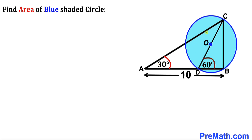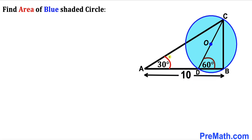Welcome to pre-math. In this video we have a blue shaded circle with center O and triangle ABC, such that side CD is the diameter of the blue circle. Side AB is 10 units, angle CAD is 30 degrees, and angle CDB is 60 degrees. Our task is to calculate the area of this blue shaded circle.